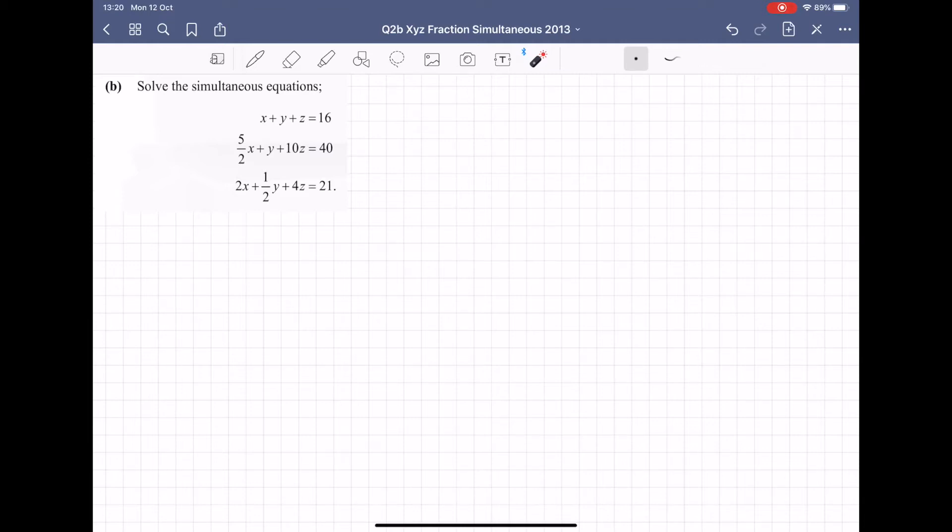So a couple of things to watch out for. The first thing I'm looking for is that the x's are over the x's, the y's are over the y's, the z's are over the z's and they're equal to the number. So at least they're all lined up properly so I don't have to move them around.